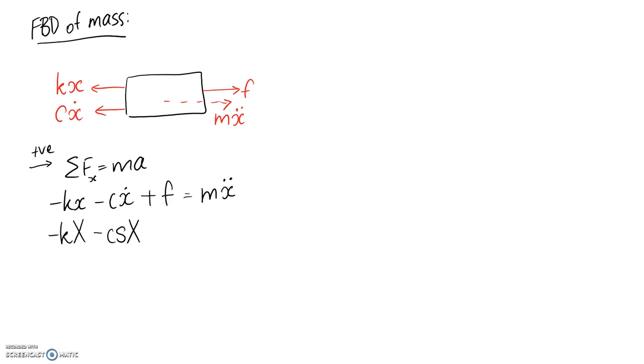All right, f we said is a function of time. It's got no constant in front, so it's just going to be itself, basically. And this one here, m is the constant that stays out the front, and it's got two dots. So it gets s squared and x on the end. Okay? And what I've done is I've gone from lowercase in the time domain to uppercase in the frequency domain for the x's and the f.